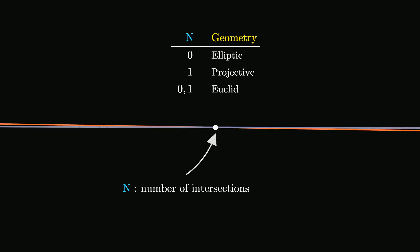When you adopt a different parallel axiom, you're no longer in Euclidean geometry. Instead, you enter the world of non-Euclidean geometry systems. It's a fascinating shift just from one postulate.